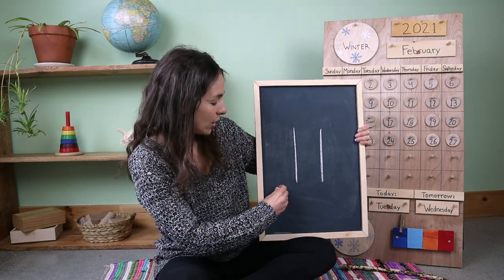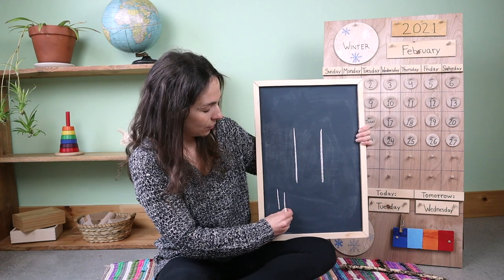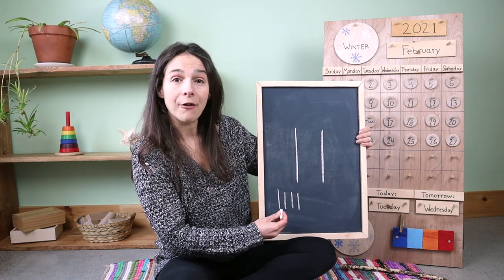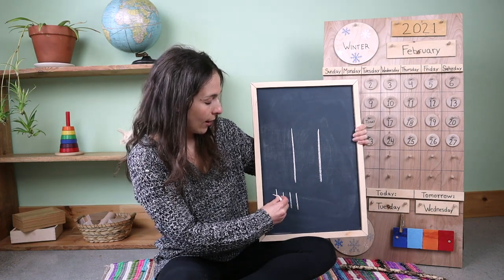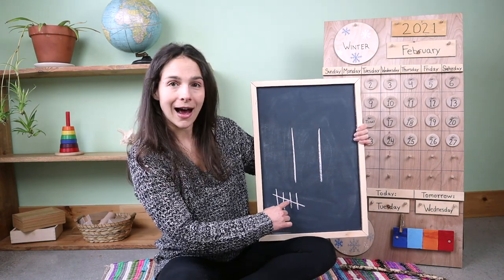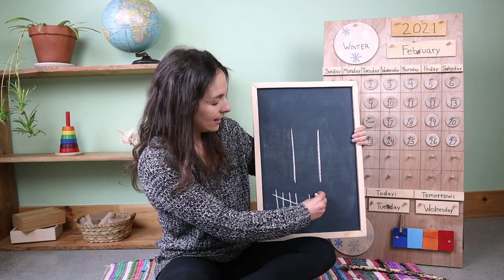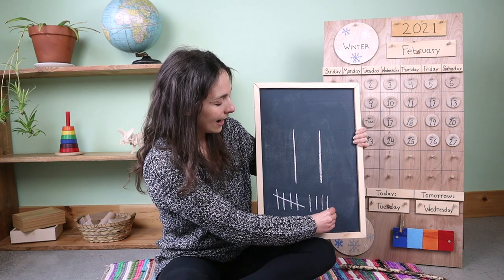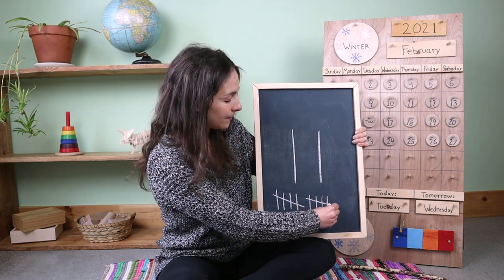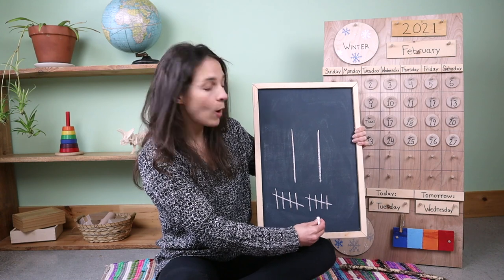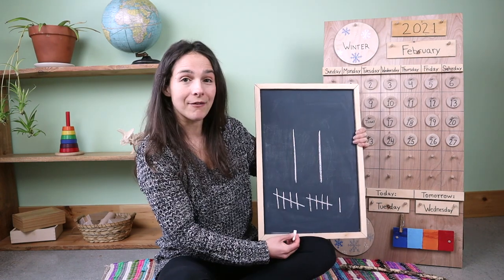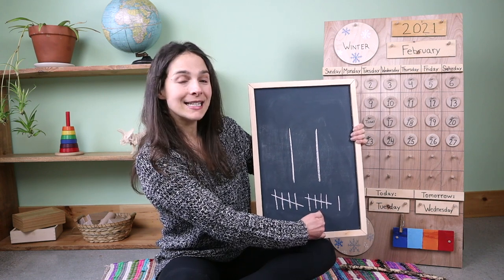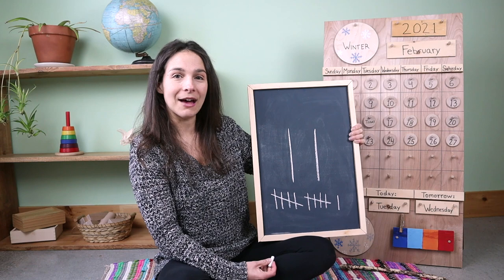Here we go. One, two, three, four. After four comes five, so I'm going to go across like this — five, six, seven, eight, nine. Another group of five — ten. And one more makes 11. One, two, three, four, five, six, seven, eight, nine, ten. Eleven. The number 11.